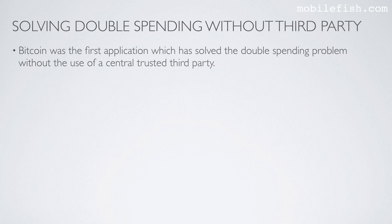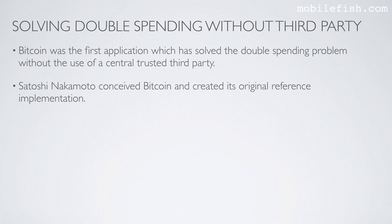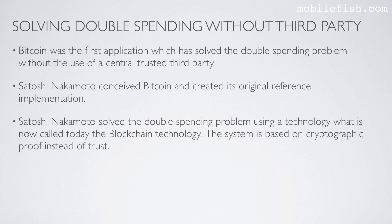But there is a solution to the double-spending problem without the use of a third party. Bitcoin was the first application to solve the double-spending problem without a central trusted third party. Satoshi Nakamoto conceived Bitcoin and created its original reference implementation. Satoshi Nakamoto solved the double-spending problem using a technology now called blockchain technology. The system is based on cryptographic proof instead of trust.